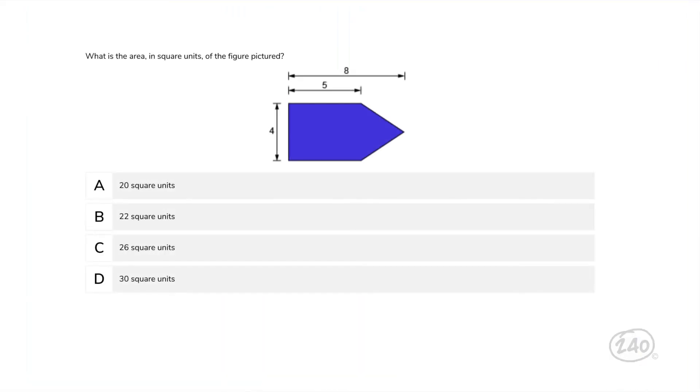Last up is geometry. What is the area in square units of the figure pictured? Just like the example we looked at earlier, we can break this into two smaller shapes: a triangle and a rectangle. The rectangle has sides of five and four to get an area of 20 units squared. The triangle has a base of four and a height of three to get an area of six units squared. Finally, we add the two areas together to get 26 units squared. So this answer is the best one.